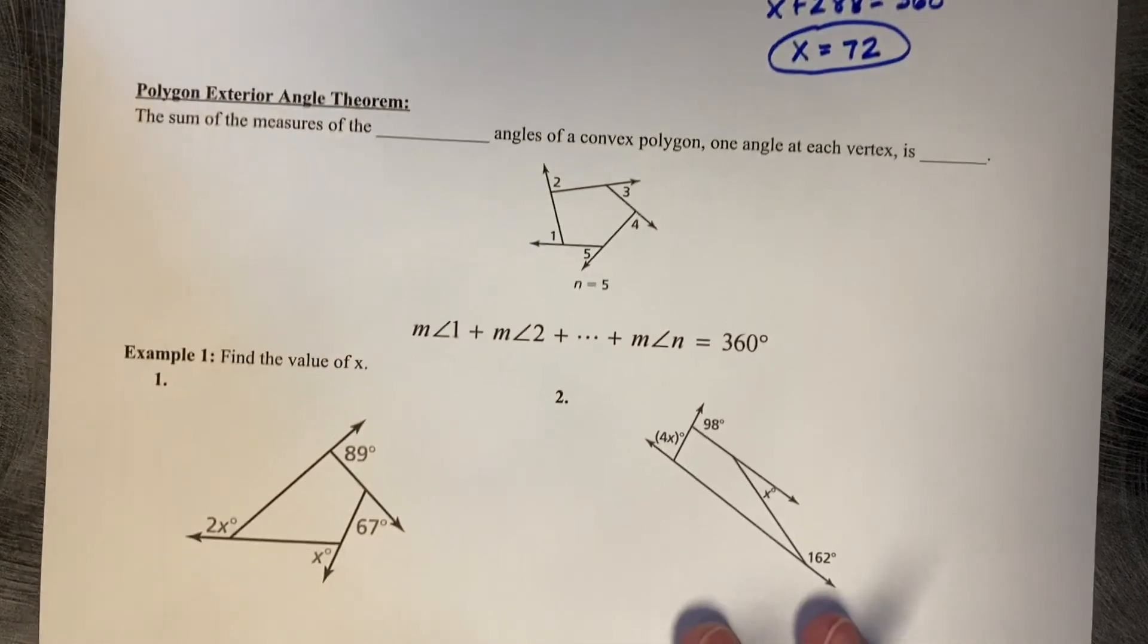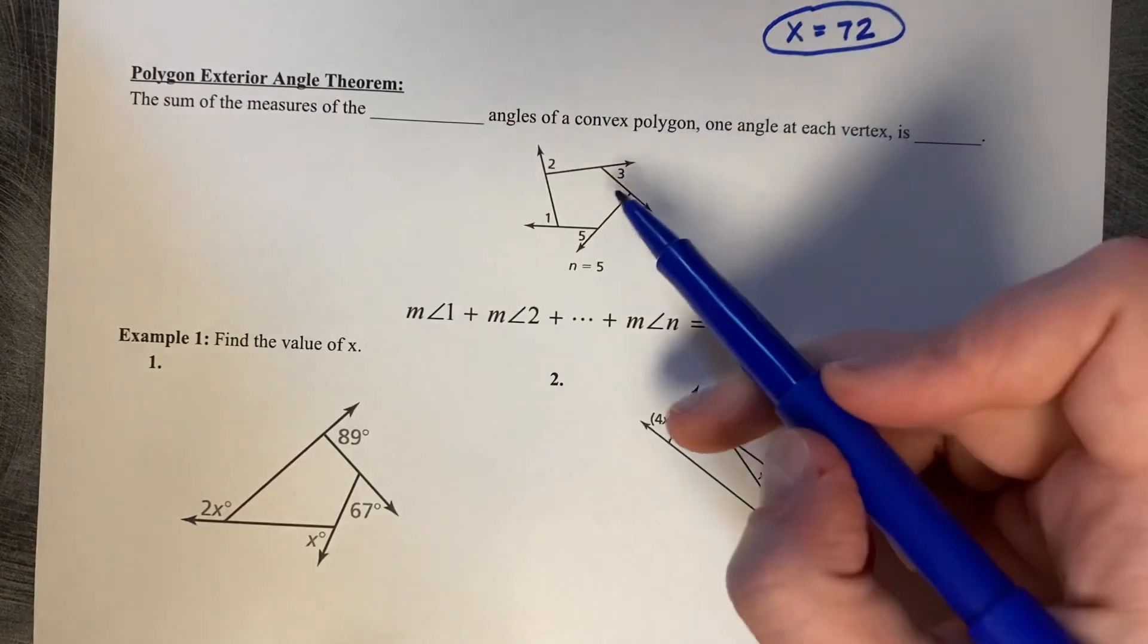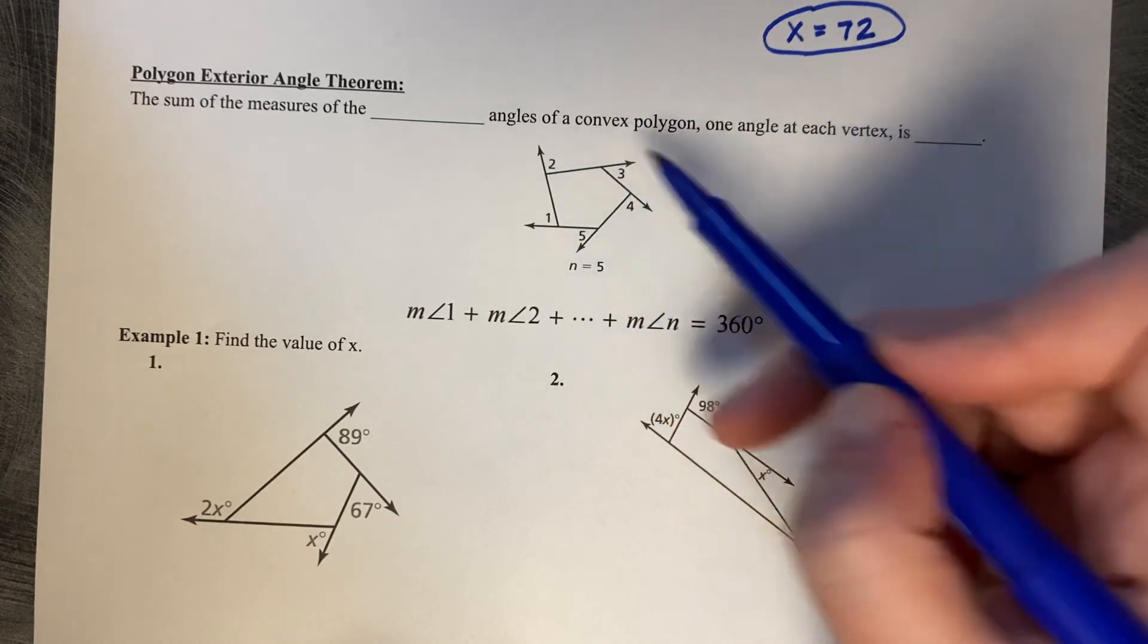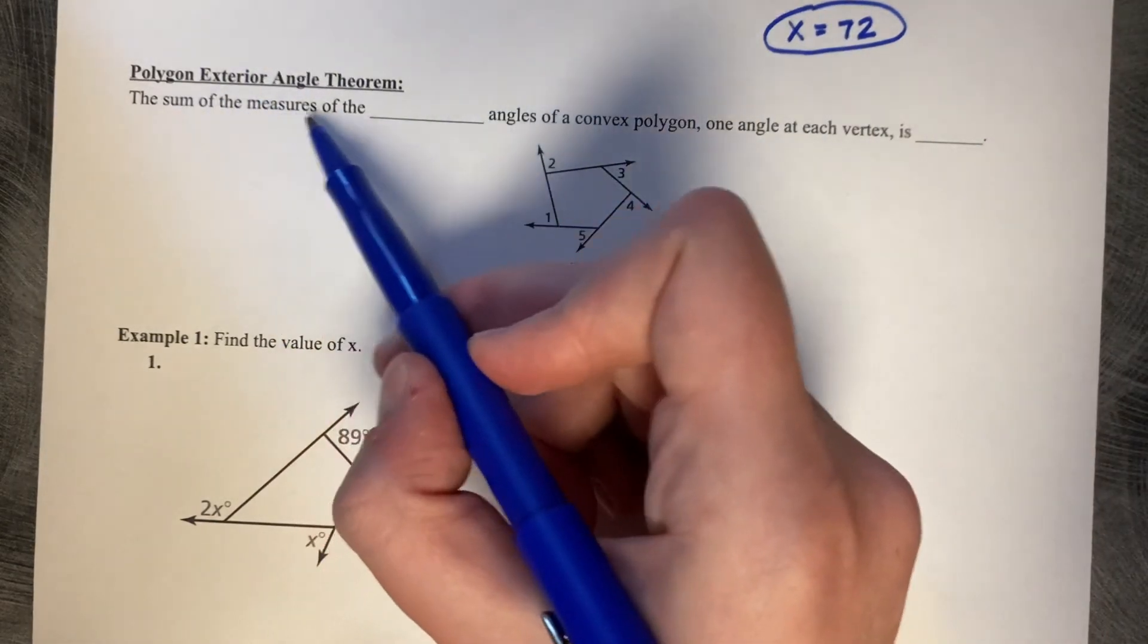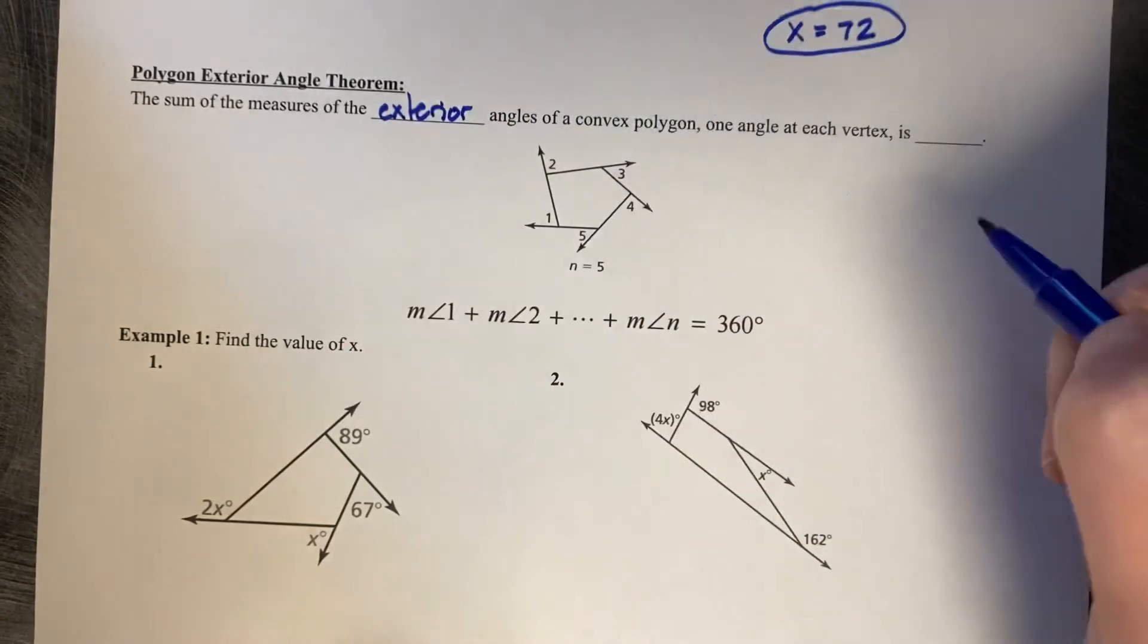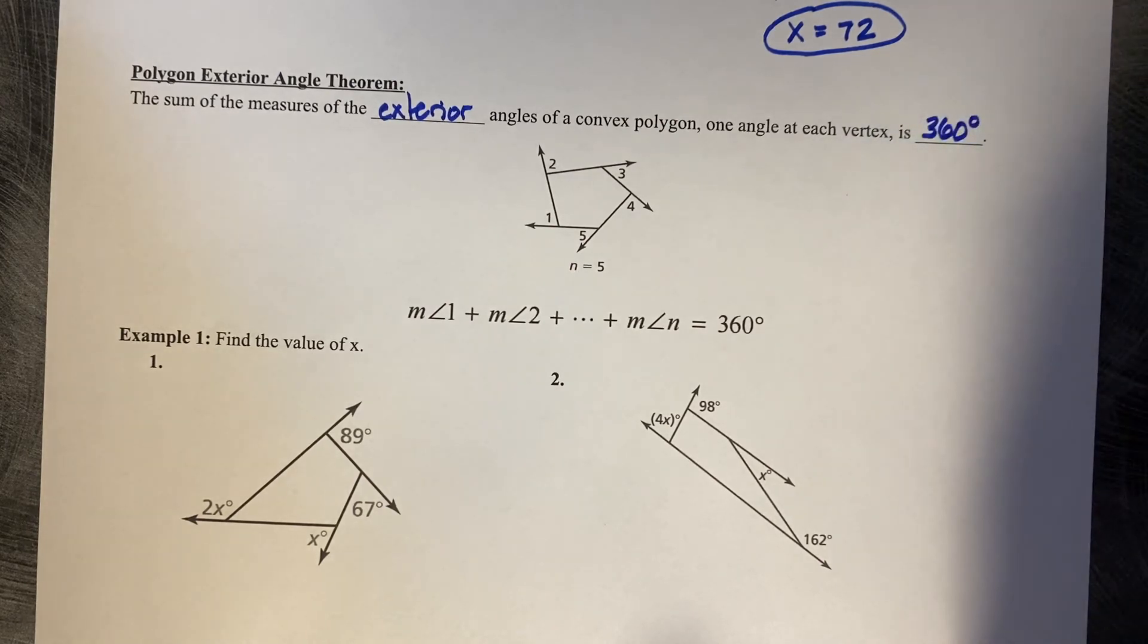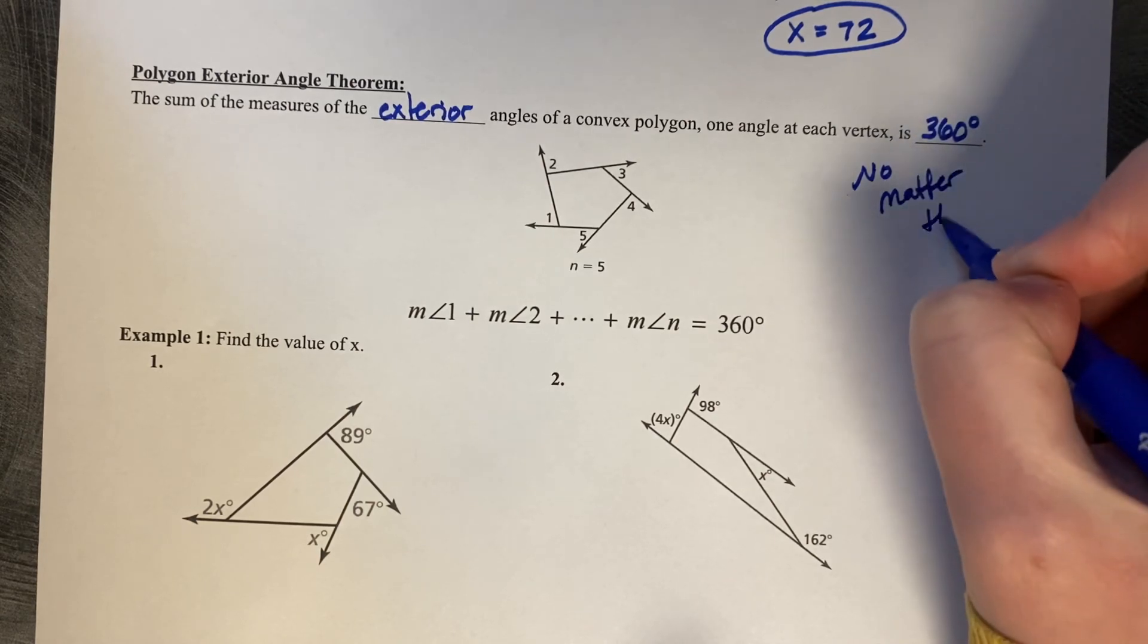Okay, our last concept is instead of the interior angles, what is the sum of the exterior angles? So see this figure here. This is a pentagon. The pentagon has five exterior angles. And this is going to be true for all polygons. The sum of the measures of the exterior angles of a convex polygon, one angle at each vertex, is 360 degrees.